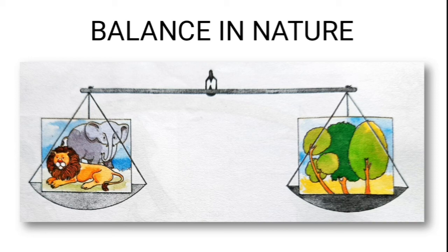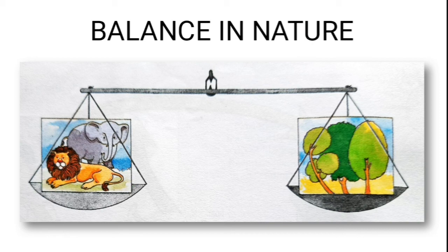Balance in nature is very important. If the balance is not maintained, one of the species is affected. The number of plants and animals must be kept in balance. If there is a sudden increase in the number of animals, plants may not be able to supply enough food and oxygen. If there is a sudden increase in plants, the carbon dioxide from animals will not be sufficient for all the plants. Similarly, a decrease in plants causes imbalance and animals will be affected.